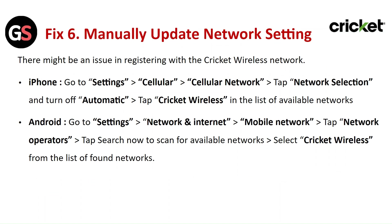Fix 6: Manually Update the Network Settings. There might be an issue when registering with the Cricket Wireless network. For iPhone, go to Settings, then Cellular, then Cellular Network. Tap on Network Selection and turn off Automatic, then tap on Cricket Wireless in the list of available networks. For Android, go to Settings, then Network and Internet, select Mobile Network, and tap Network Operators. Tap Search Now to scan for available networks, then select Cricket Wireless from the list.